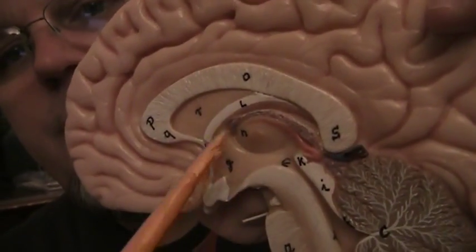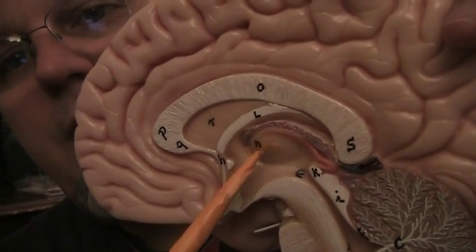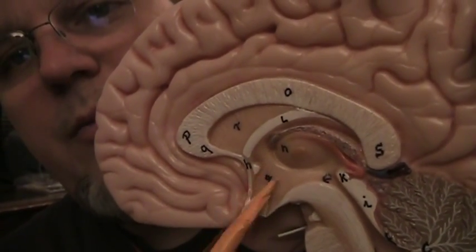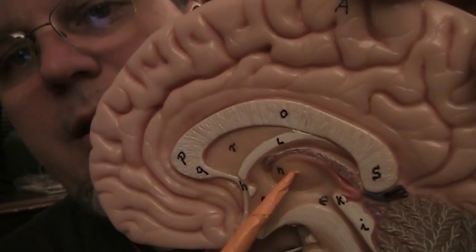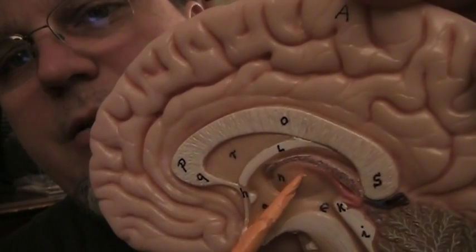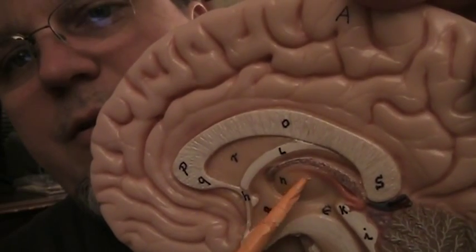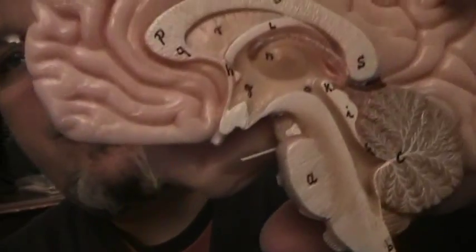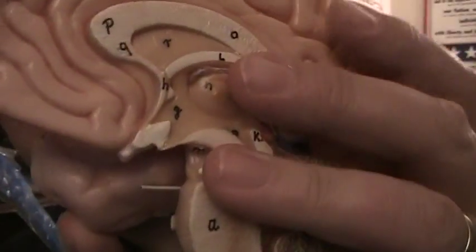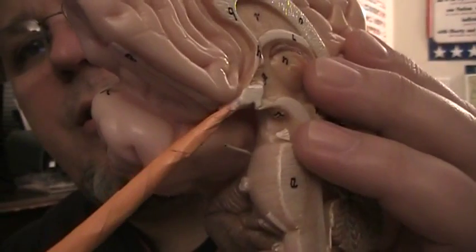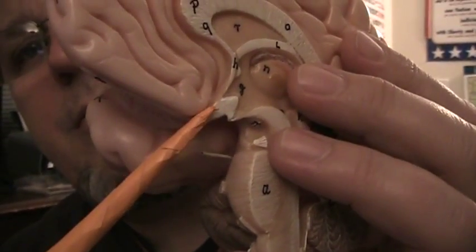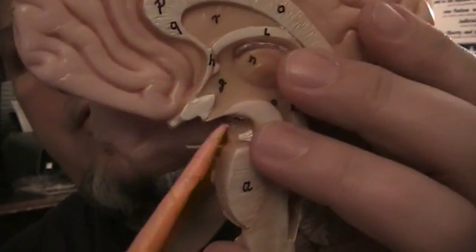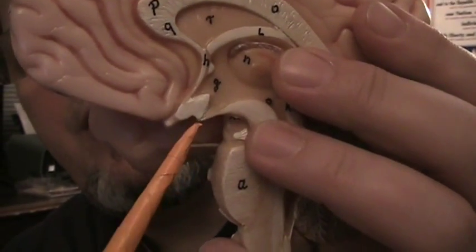There's the thalamus right here. Below this floor, this is the hypothalamus. There's the interthalamic adhesion, this is where it connects the left to the right thalamus. If you look close, let me turn this a little bit so you can see, you can see there's the optic nerve, optic chiasm right here, and right here it looks like a little funnel. This is what...